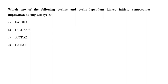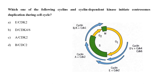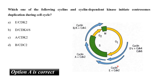Which one of the following cyclins and cyclin-dependent kinases initiate centrosome duplication during the cell cycle? A. Cyclin E and CDK2, B. Cyclin D and CDK4 or 6, C. Cyclin A and CDK2, or D. Cyclin B and CDC2? The transition from G1 to S phase is carried out by Cyclin E and CDK2, which are also responsible for initiation of centrosome duplication. In the absence of Cyclin E, Cyclin A initiates centrosome duplication along with CDK2. But originally it is a function of Cyclin E and CDK2. So the correct answer is option A.